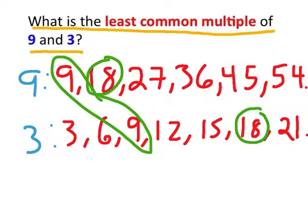But we're trying to find the least. Least is referring to the smallest number or multiple that both 9 and 3 have that are in common. So although they both have common multiples of 9 and 18, which number is smaller from those two?